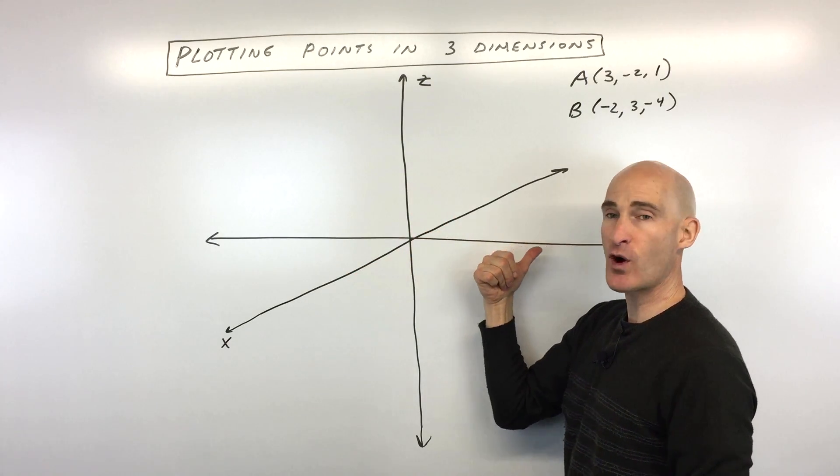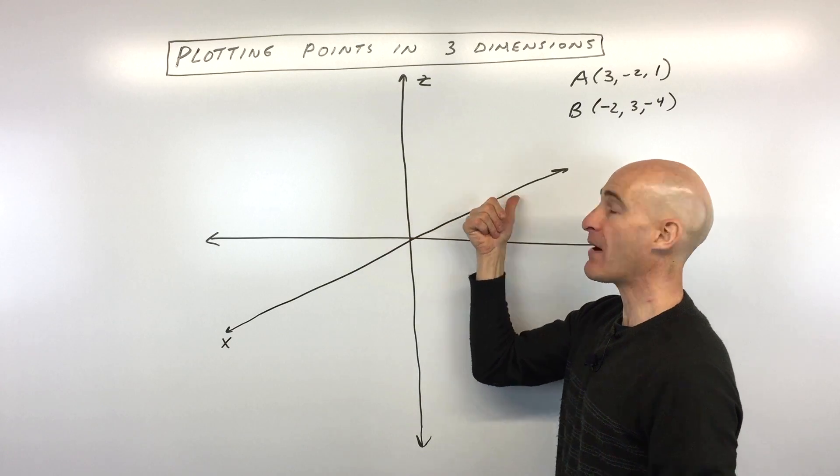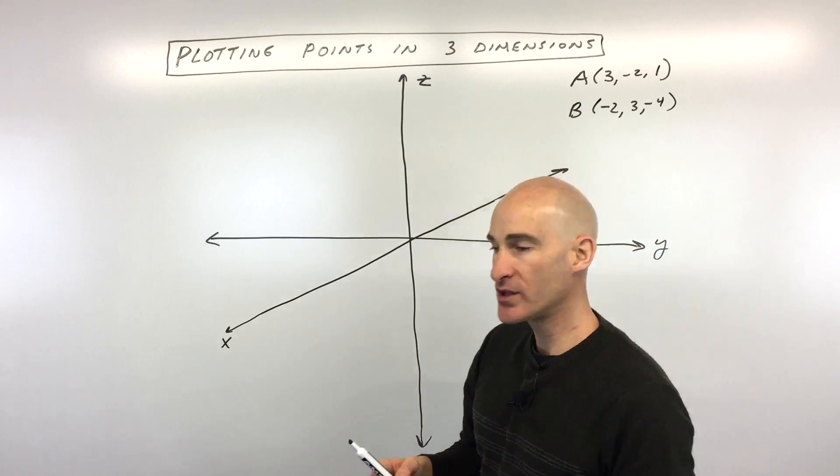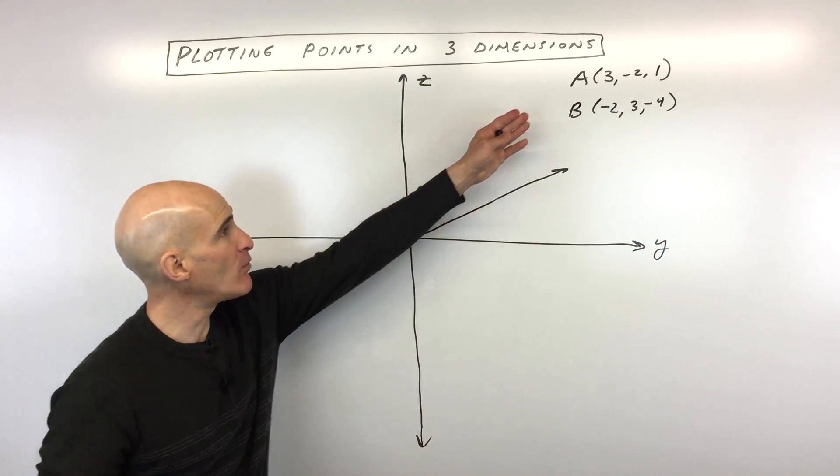This is our positive y, negative y going backwards into the board. That's our negative x, and going down is negative z. So let's go ahead and plot these points.